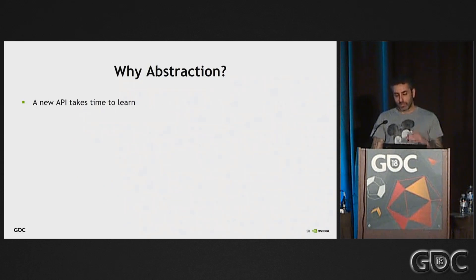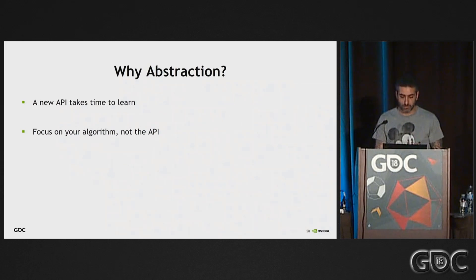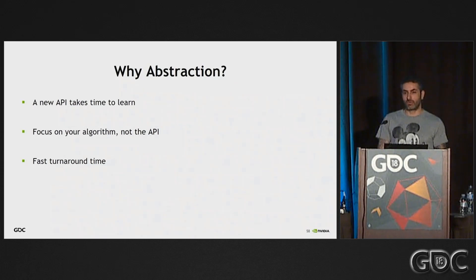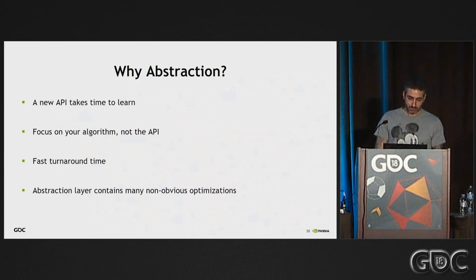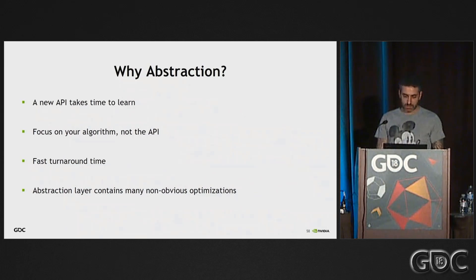A new API takes time to learn — we save you that time. We want you to focus on your algorithm, not the API. DirectX ray tracing is a big addition to DX; let's abstract the API once and focus on the algorithms and problems we want to solve. It allows for fast turnaround time — we can test many more ideas in the same time on different assets. The abstraction layer also contains many non-obvious optimizations, such as how to handle acceleration structures and shader table updates, which Falkor takes care of for you.